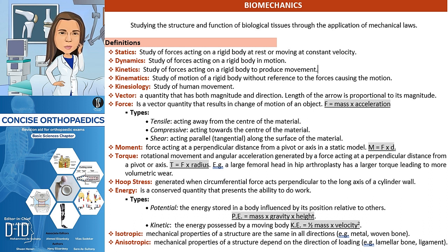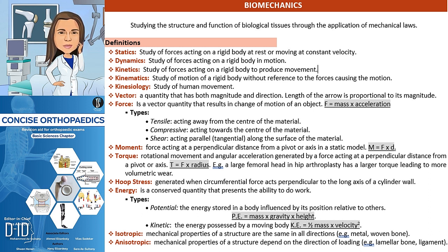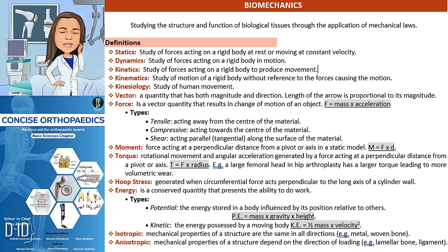Hoop stress is generated when a circumferential force acts perpendicular to the long axis of a cylinder wall. Energy is a conserved quantity that represents the ability to do work. There are different types of energy such as potential energy, which is the energy stored in a body influenced by its position relative to others, and kinetic energy, which is the energy possessed by a moving body.